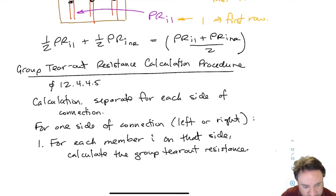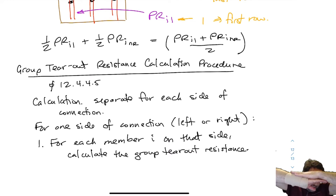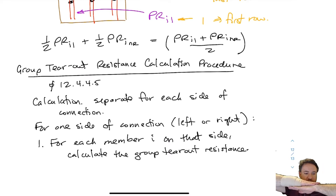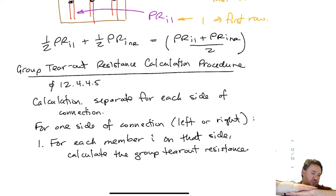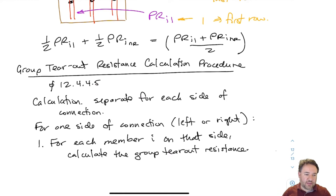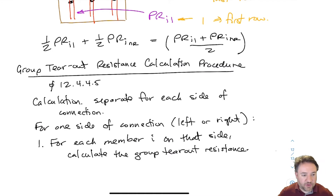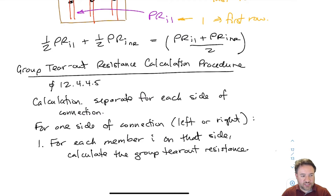Just like row shear, I'm only calculating the resistance of one side of the connection at a time — I have my left side and my right side joined together. I'll calculate group tear out from the left side using this approach, then come back and find group tear out for the right side. If both sides are wood I use this method for both; if one side is steel I use the steel standard to calculate group tear out there, which we won't cover in this course. For one side of the connection, I calculate group tear out for each member and then add up all the members on that side.